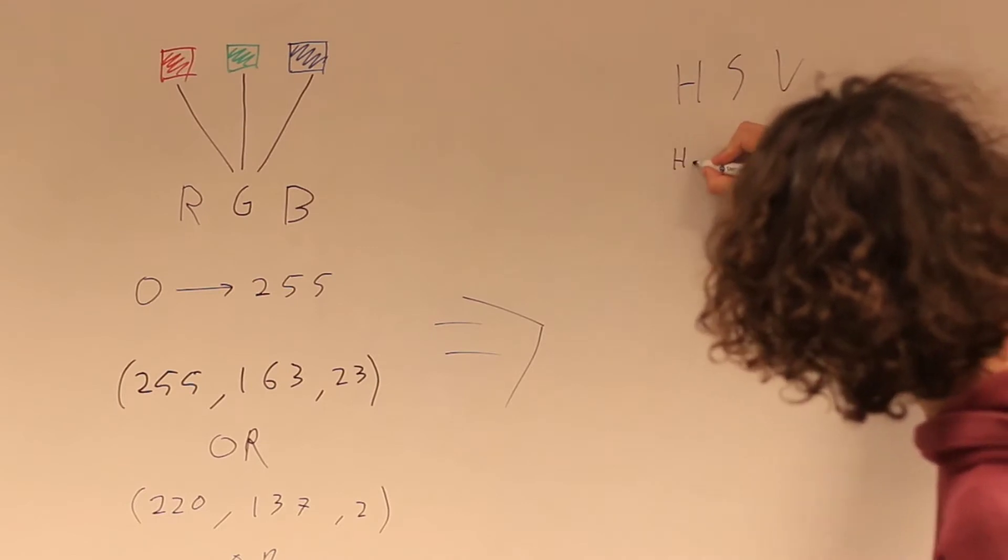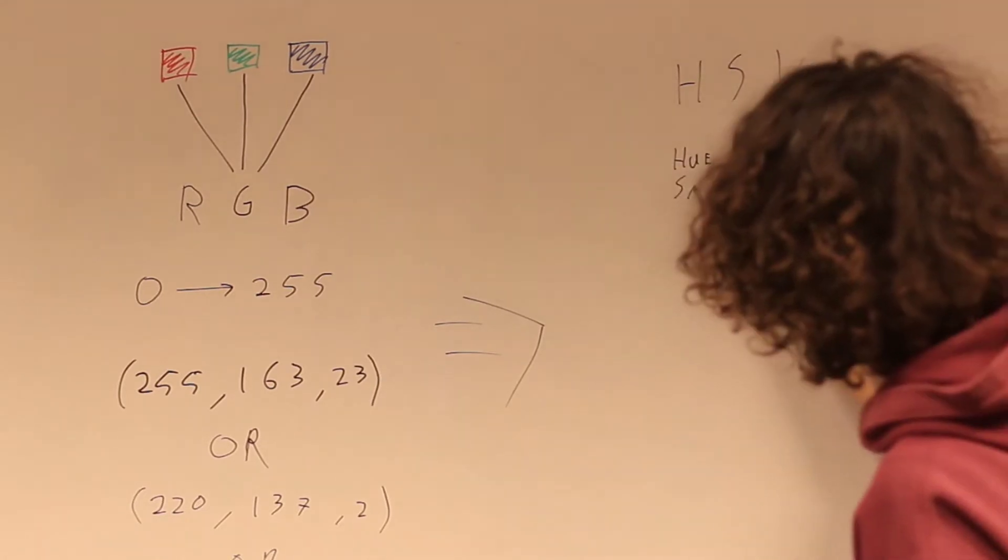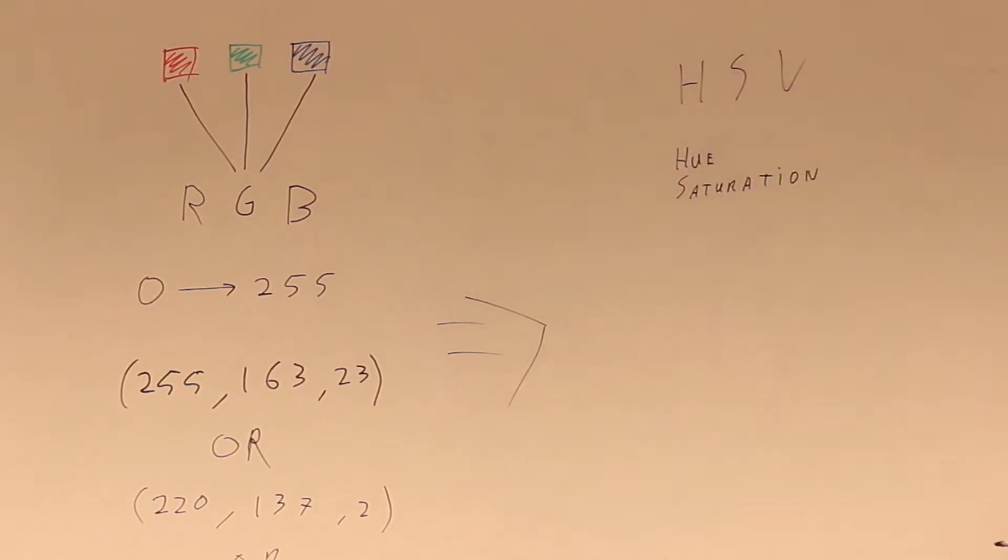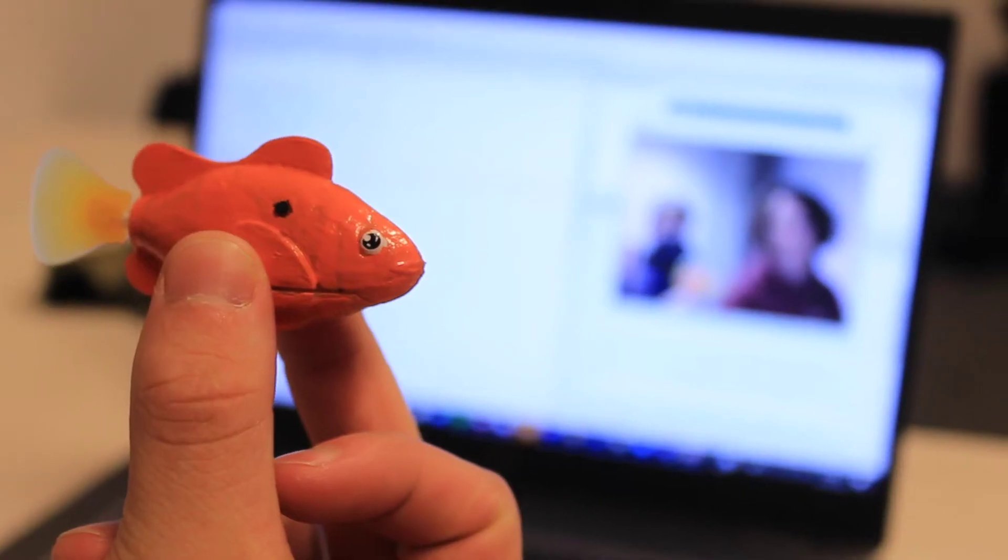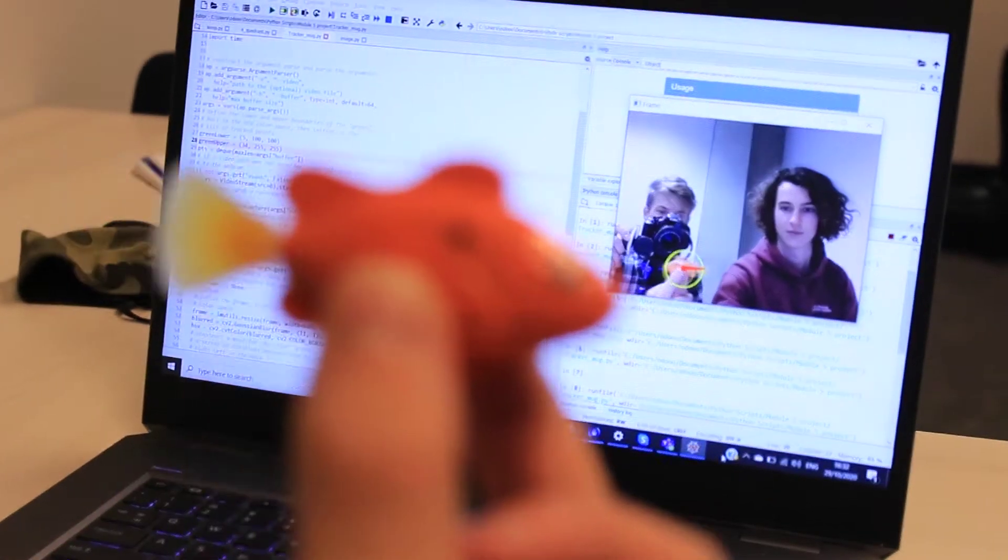We translate RGB to a hue, saturation and value color model as orange has completely different RGB values for different shades. The saturation and value describe the brightness of the color which makes it a lot easier to program the limits.